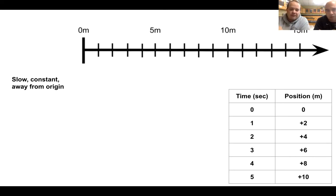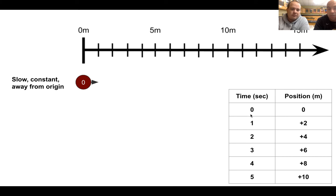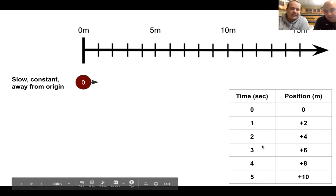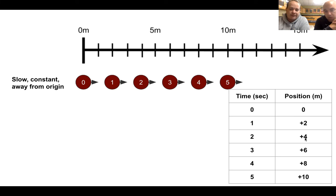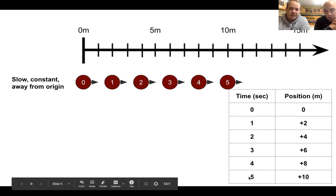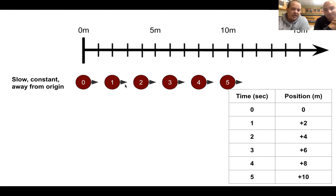Here's our first motion map. Remember, that first dot represents where you are at zero seconds — at the start. In this case it happens to be at the origin. Looking at our data table, we're going to give you data tables and you'll have to make the motion map, or I'll give you a motion map and you'll create the table. At zero seconds, that's our first dot. One second, we go to two meters; two seconds, a dot at four; three seconds, a dot at six; four, a dot at eight meters; five, a dot at ten. Notice we went two meters each time, and the arrows only go one meter each time — half that distance.